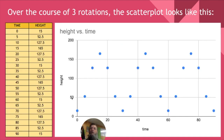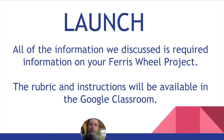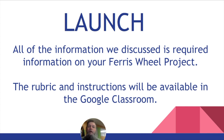Over the course of three rotations, the scatter plot shows the pattern repeating — going from 15 to 165 back to 15, over and over, no matter how many times the Ferris wheel rotates. All the information we discussed will be required for your Ferris wheel project. Today's assignment is trig practice; tomorrow's assignment will be doing a table like this around a small Ferris wheel. Get those assignments done and be blessed.